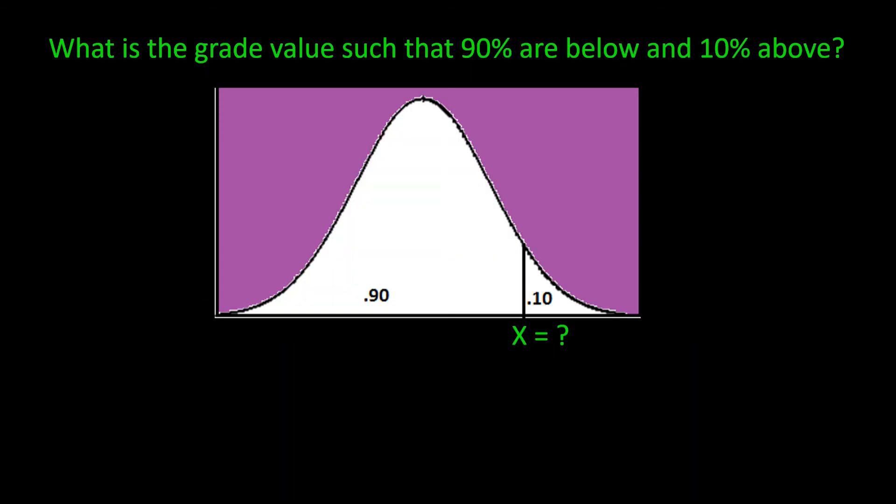We want to know the value of x, the grade, such that 10% scored higher. So if we have 10% or 0.10 above x, then 1 minus 10%, or 90%, would be the area below x. So to use Excel we would put in the probability value of 0.90, and that is the area at or below the x value we're looking for.